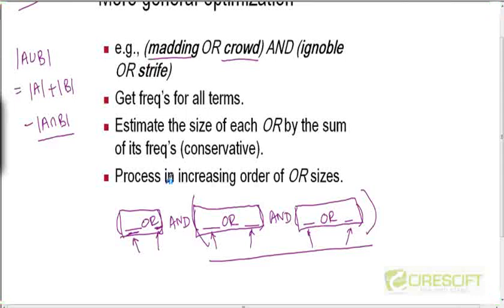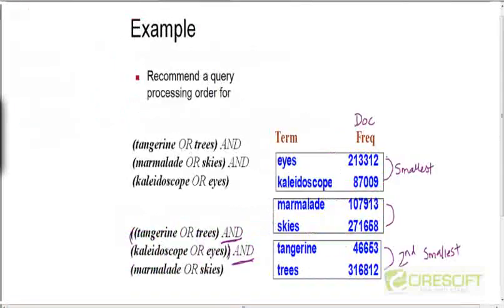And if the length of the intermediate results is small, then recall that all these operations, these Boolean operations take time proportional to the lengths. So if the length of any of the lists can be reduced, then we end up minimizing the total amount of time to process this query. So that's the motivation.